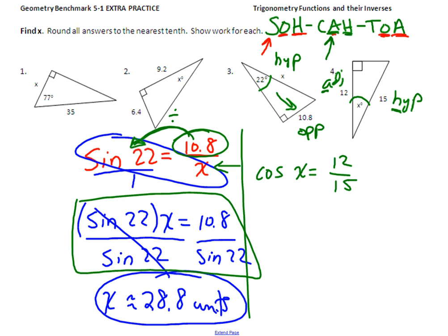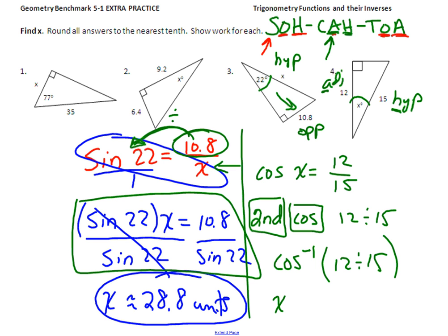Again because I don't know the angle, I'm going to do second cosine, and that's going to make this pop up on your calculator, of 12 divided by 15. Just type in that division problem and you should get 36.9 degrees. That should be it.